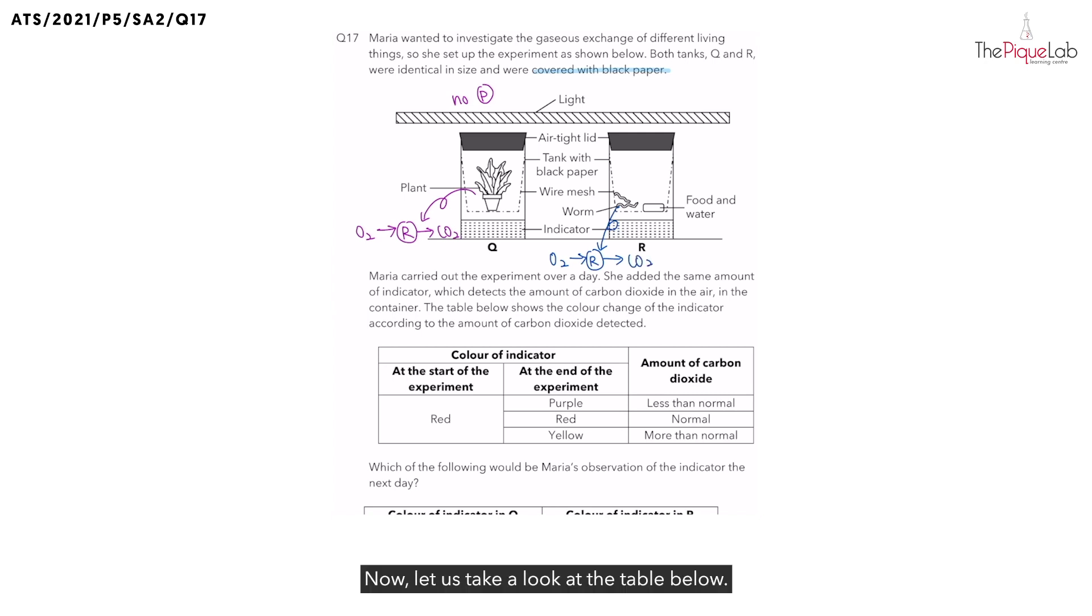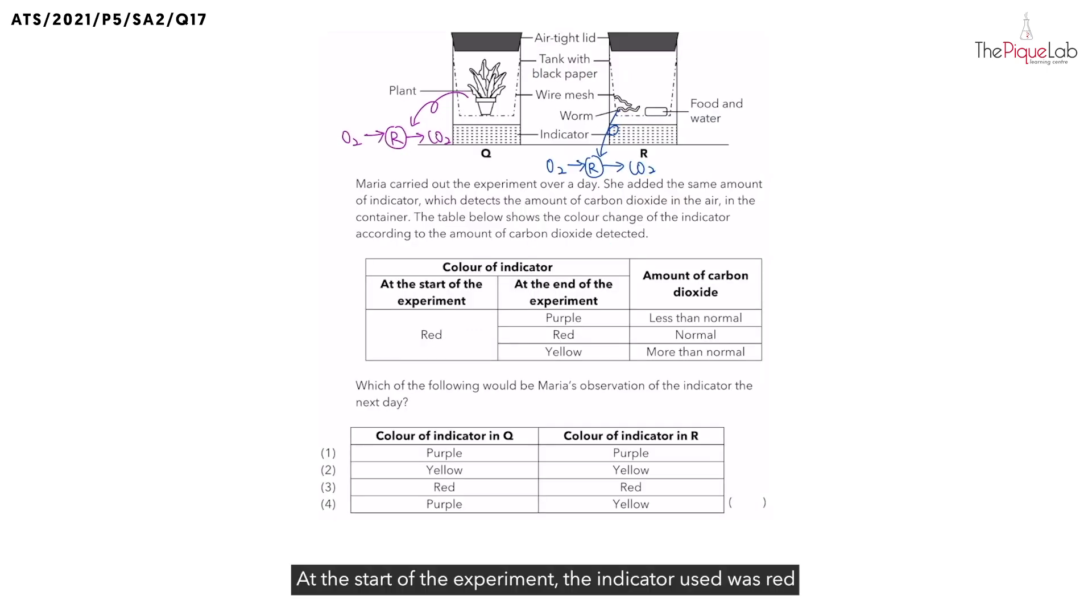Now, let us take a look at the table below. At the start of the experiment, the indicator used was red in color. However, it changes color according to the amount of carbon dioxide it detects. Since both the plant and worm are carrying out respiration, where they release carbon dioxide, what can we say about the amount of carbon dioxide in both tanks? Is it less than normal or more than normal? In this case, it will be more than normal. Hence, the indicator in both tanks should turn yellow. And with that, our answer is two.